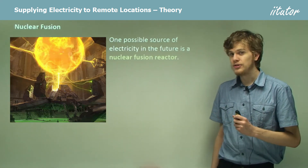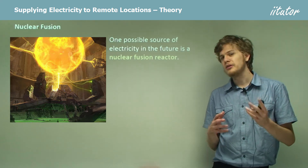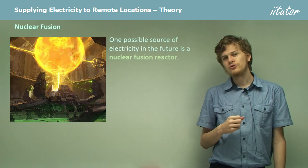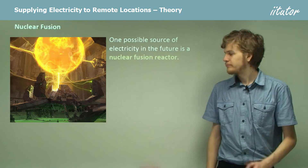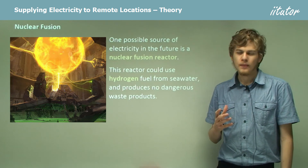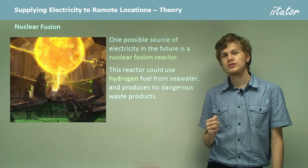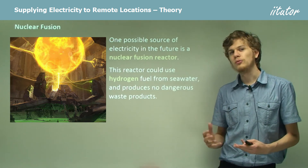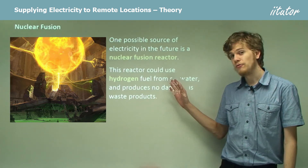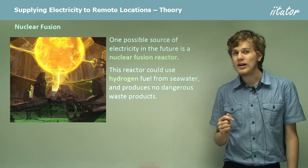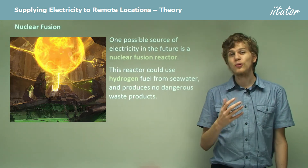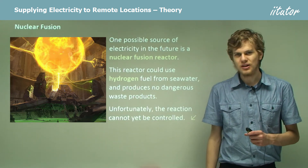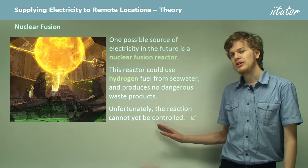One possible source of electricity in the future that we haven't really mastered at the current time is the nuclear fusion reactor, and this differs from an ordinary nuclear reactor. A nuclear fusion reactor uses hydrogen for fuel instead of uranium. We can extract hydrogen from seawater with a fairly simple chemical process, and fusion reactors don't produce radioactive waste in the same way that uranium reactors do. There is however one small problem — we haven't invented it yet: the reaction cannot yet be controlled.